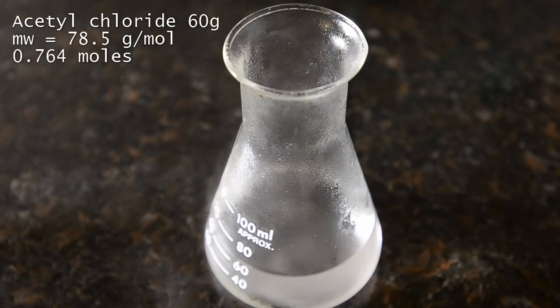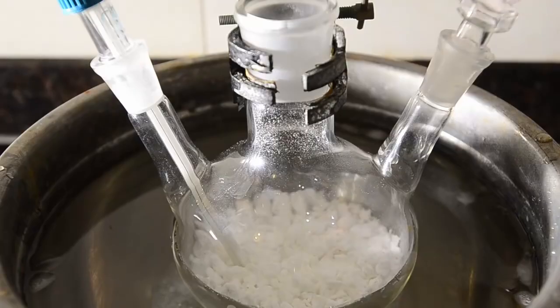Measure out 60 grams of chilled acetyl chloride, this is about 55 ml of liquid. As you can see, you'll need ventilation here.